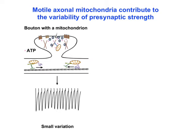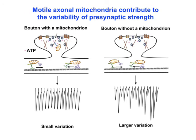We proposed that at terminals with stationary mitochondria, the motile mitochondria have less impact on the EPSC amplitude. In a mitochondria-free bouton, however, mitochondria passing through terminals will influence ATP levels and change synaptic vesicle release. The multiple ATP-dependent processes at the terminals may collectively contribute to synaptic variability.